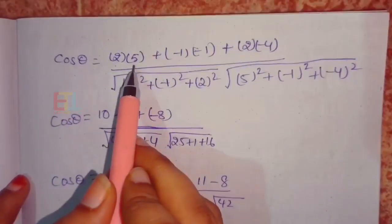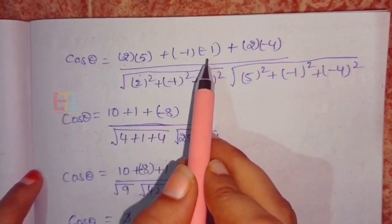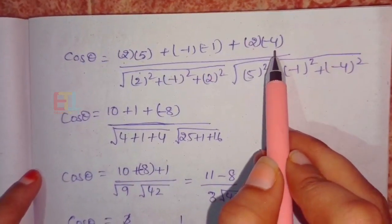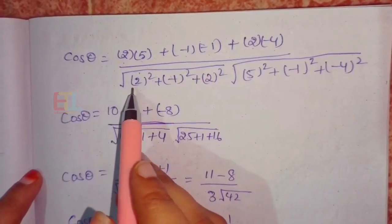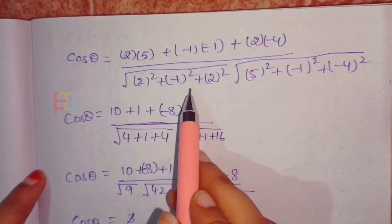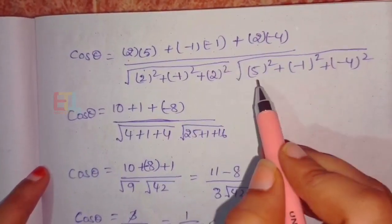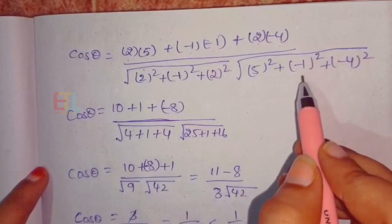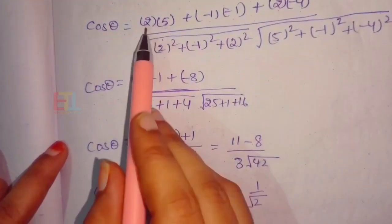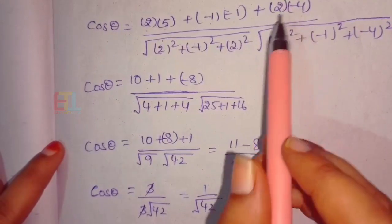Substituting: a1·a2 = 2×5 = 10; b1·b2 = (−1)×(−1) = +1; c1·c2 = 2×(−4) = −8. Denominator: root of (2² + (−1)² + 2²) = root of (4+1+4) = root 9 = 3. And root of (5² + (−1)² + (−4)²) = root of (25+1+16) = root 42.